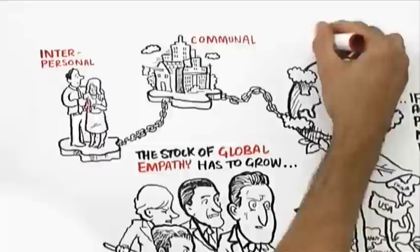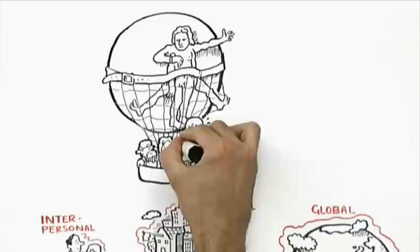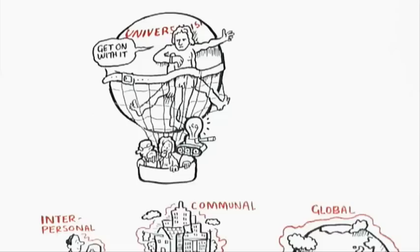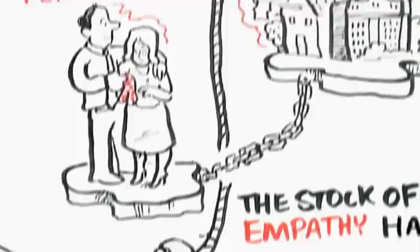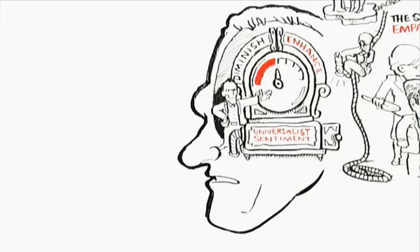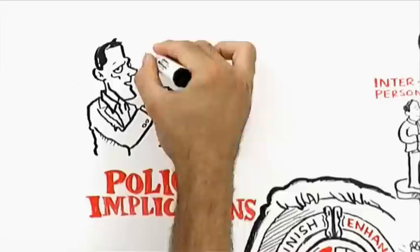But the chain linking interpersonal, communal, and global-scale empathy is complex. Intellectuals, politicians, and interest groups, and think tanks spend an enormous amount of time debating what should be the content of universalism, which rights, which entitlements, which capabilities. But shouldn't we perhaps just spend a little more time exploring the foundations of universalist sentiment? What is it that enhances and what is it that diminishes our empathic capacity?